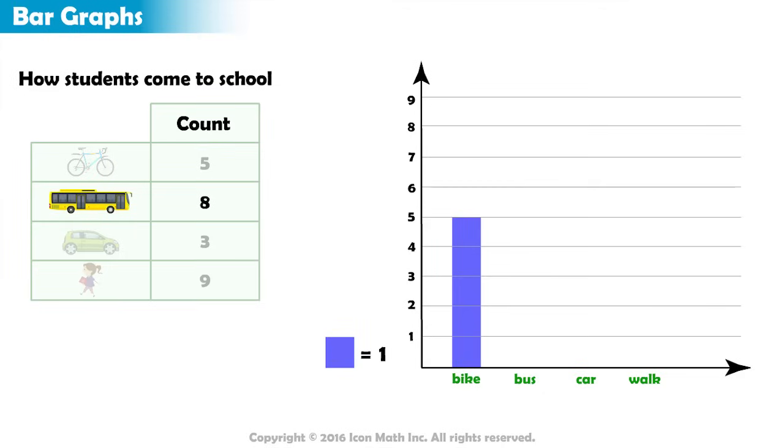Moving on to the next category, there are eight students who take the bus to school. So on top of the bus category, we color eight squares.